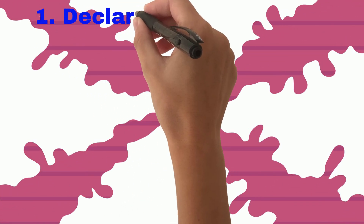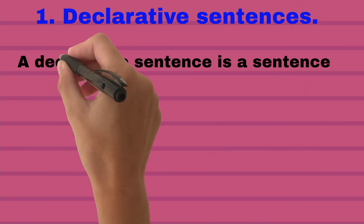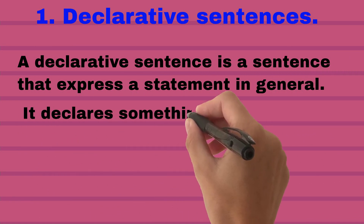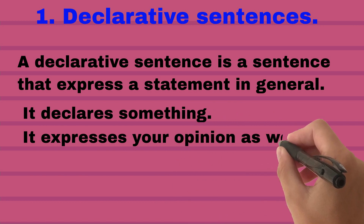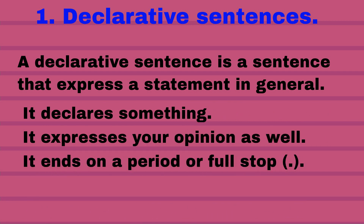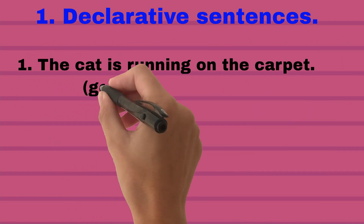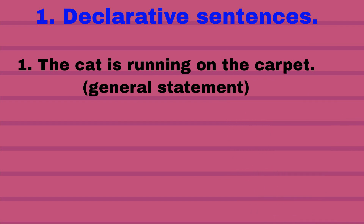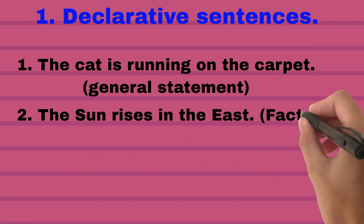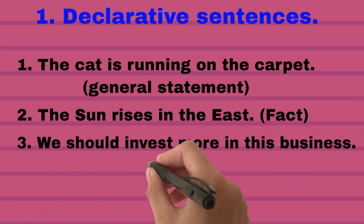Let's discuss declarative sentences. A declarative sentence is a sentence that expresses a statement in general. It declares something, expresses your opinion as well, and ends with a period or full stop. For example: 'The cat is running on the carpet' — a general statement. 'The sun rises in the east' — a factual statement. 'We should invest more in this business' — showing an opinion.